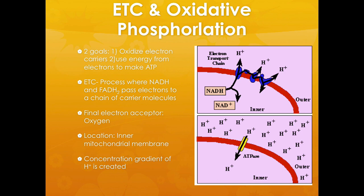Lastly, the fourth step is the electron transport chain, or oxidative phosphorylation. This process has two main goals. One is to return the electron carriers to their primary empty state — in other words, to oxidize them. The second goal is to use the energy from those electrons to make ATP. If we don't oxidize the electron carriers back to their empty state, we can't keep running glycolysis, PDC, or the Krebs cycle. We need empty electron carriers so they can accept electrons during those three processes.